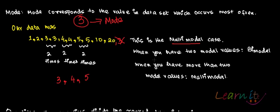In case 5 was also not there and occurring only once, then 3 and 4 would each be occurring twice — that would be the case of bimodal, where there are two modes in the data set. So when you have more than two modes, you have multi-modal. This was a very brief introduction to measures of central tendency.